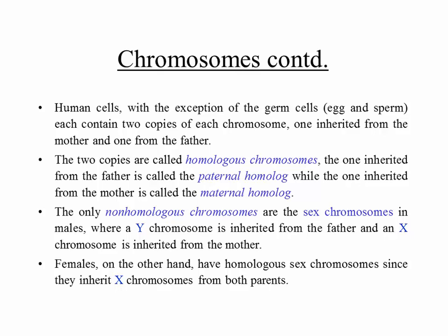In human cells, with the exception of germ cells — the egg and sperm — each cell contains two copies of each chromosome, one inherited from the mother and one from the father. Humans have 23 pairs of chromosomes. The two copies are called homologous chromosomes — paternal and maternal homologues. The only non-homologous chromosomes are the sex chromosomes in males, where a Y is inherited from the father and an X from the mother. Females have two X chromosomes.